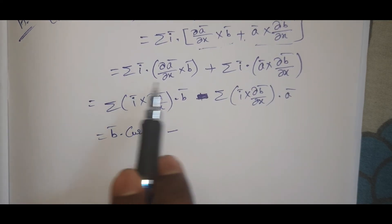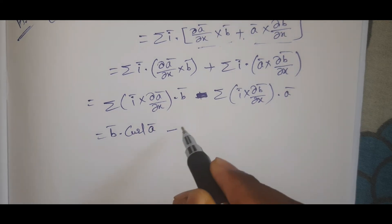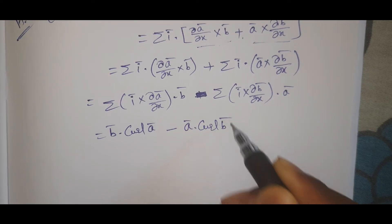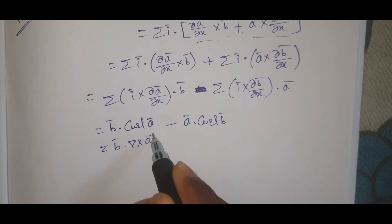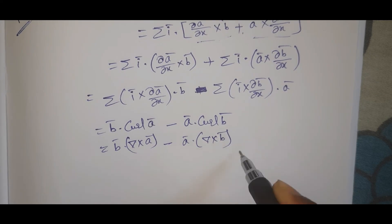a bar dot i bar dot, minus b bar dot, minus a bar dot cross b bar.